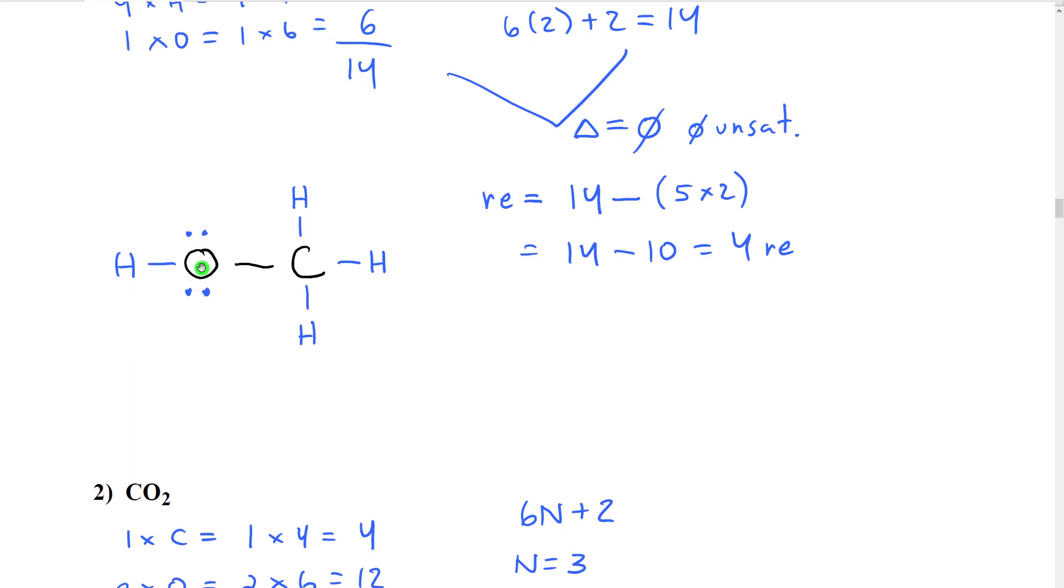What I did first then was I did my partial skeleton in black here. And since all I had for non-hydrogen atoms was oxygen and carbon, my partial skeleton would be oxygen connected to carbon. I had no multiple bonds, so I didn't need to add any other lines.